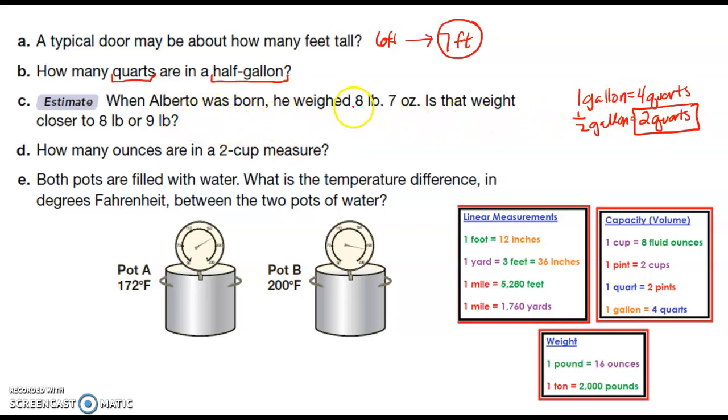When Alberto was born, he weighed eight pounds, seven ounces. Is that weight closer to eight pounds or nine pounds? So what I know is that down here in weight, it says one pound is 16 ounces. So is he closer to eight? If he were eight pounds, nine ounces, I guess he'd be closer to 16. So I'm going to say he's closer to eight.